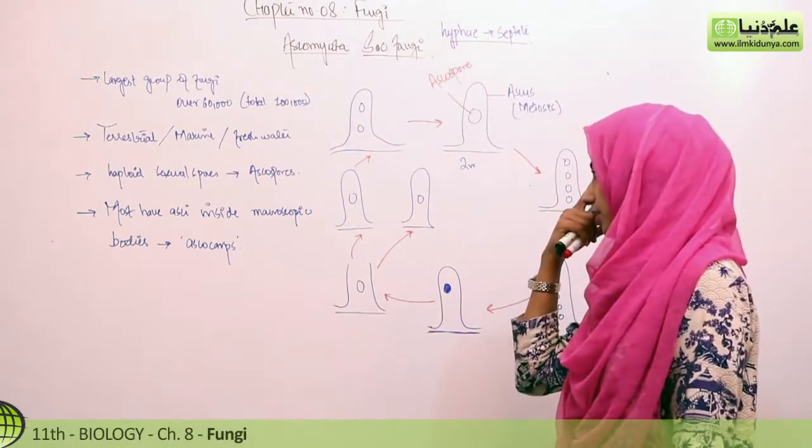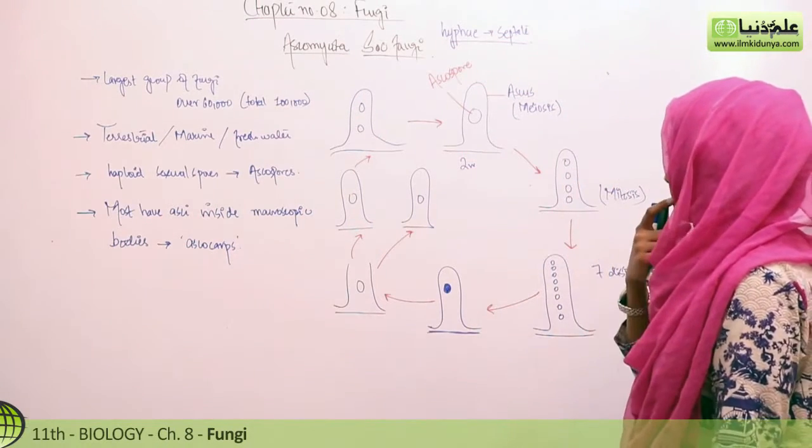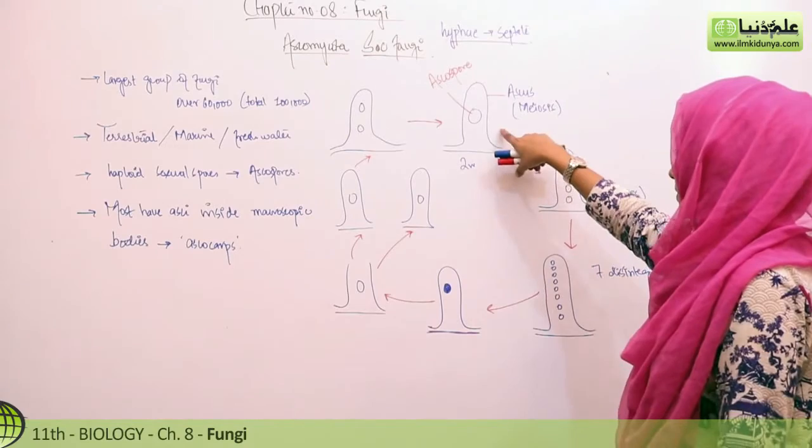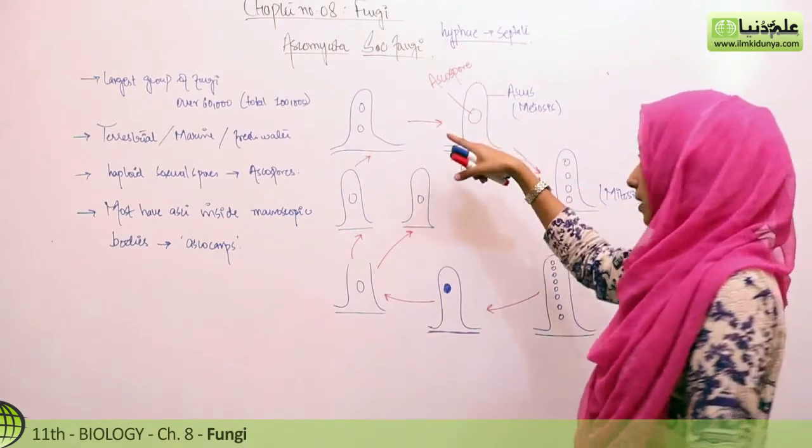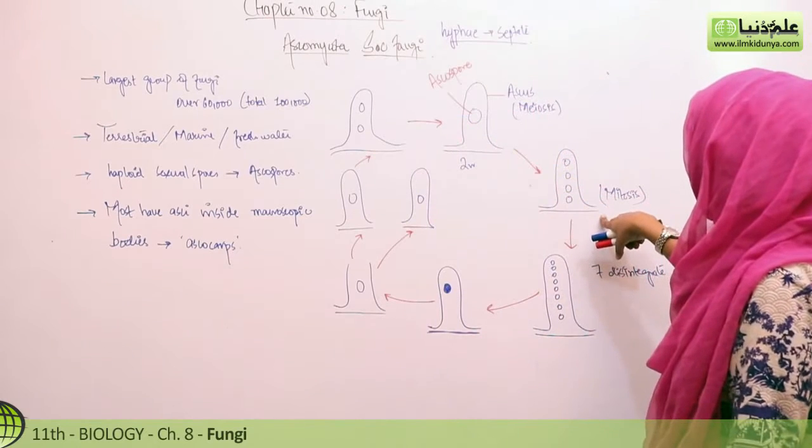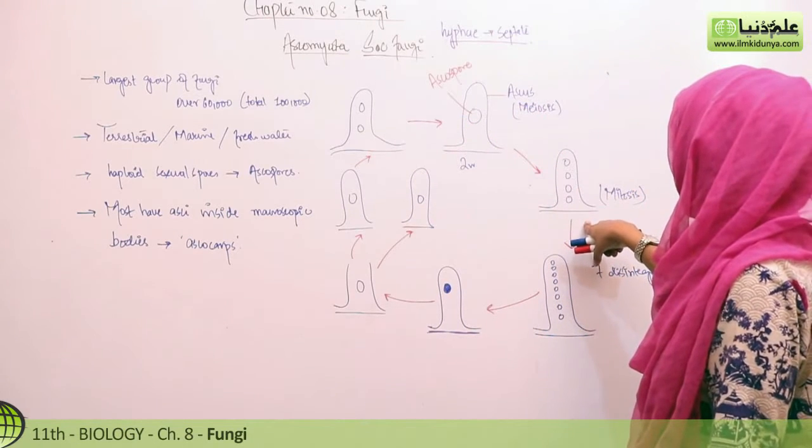Now, this life cycle is not available in the book, but you can draw it if you want. We start with ascos, these spores that form from 2N zygote formation. After that, there will be meiosis producing 4 spores.